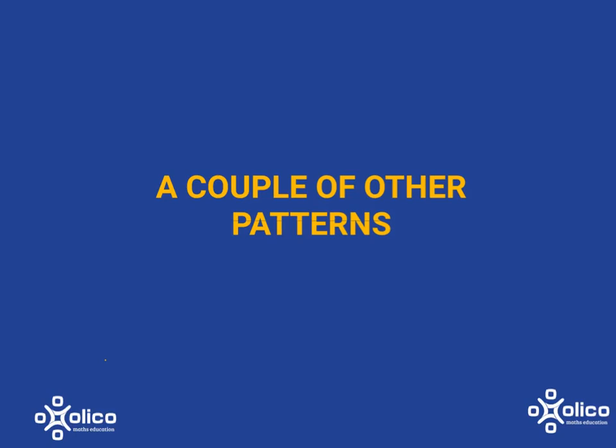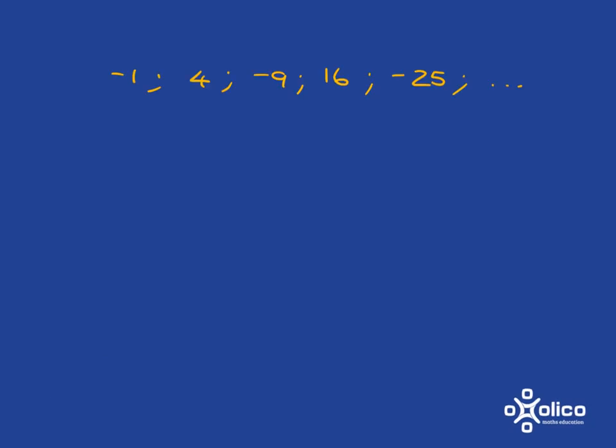We're going to look at a couple of other types of patterns. If you have a look at this pattern here it's very familiar, except for the fact that the problem is you've got negative, positive, negative, positive, negative. How do we deal with that?